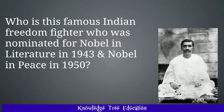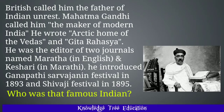Who is this famous Indian freedom fighter who was nominated for the Nobel Prize in Literature in 1943 and Nobel Peace Prize in 1950? And the answer is Rishi Aurobindo Ghosh. British called him the Father of Indian Unrest. Mahatma Gandhi called him the maker of modern India. He wrote Arctic Home of the Vedas and Gita Rahasya. He was the editor of two journals named Maratha in English and Kesari in Marathi. He introduced the Ganesh Chaturthi Sarvajanik festival in 1893 and the Shivaji festival in 1895. Who is this famous Indian? And the answer is Bal Gangadhar Tilak.